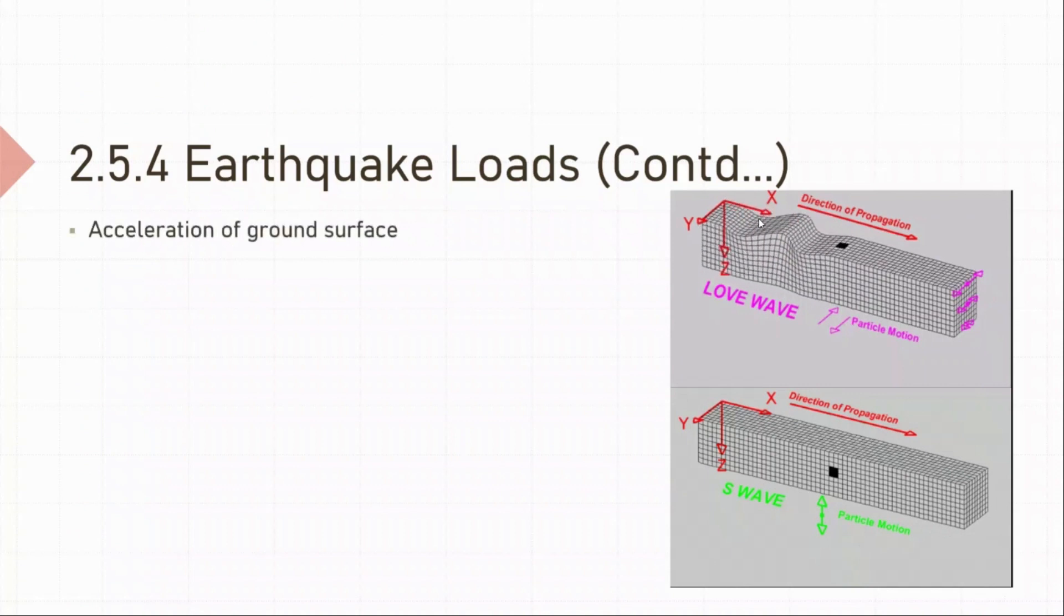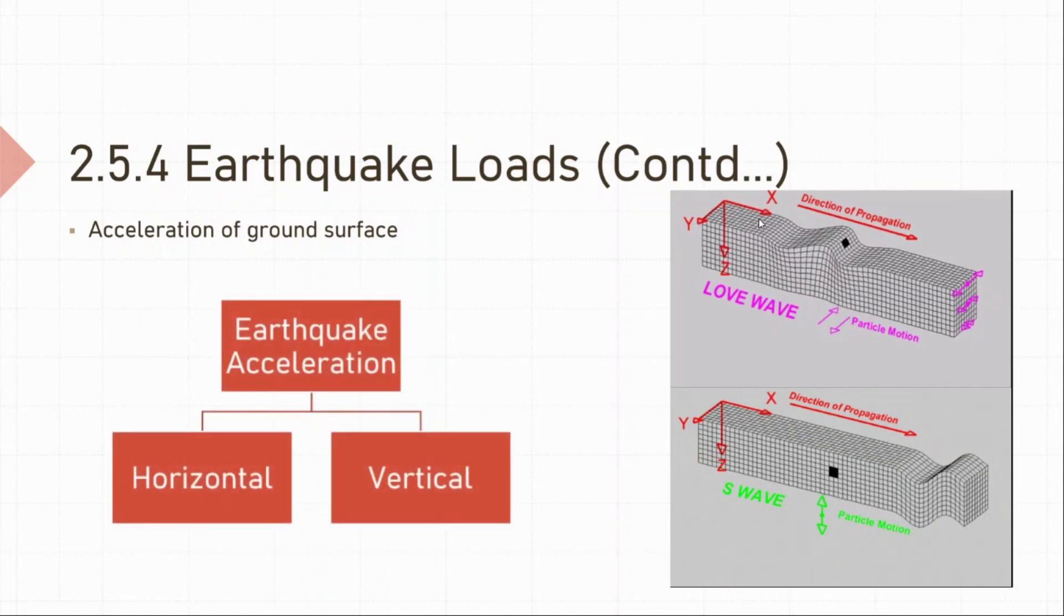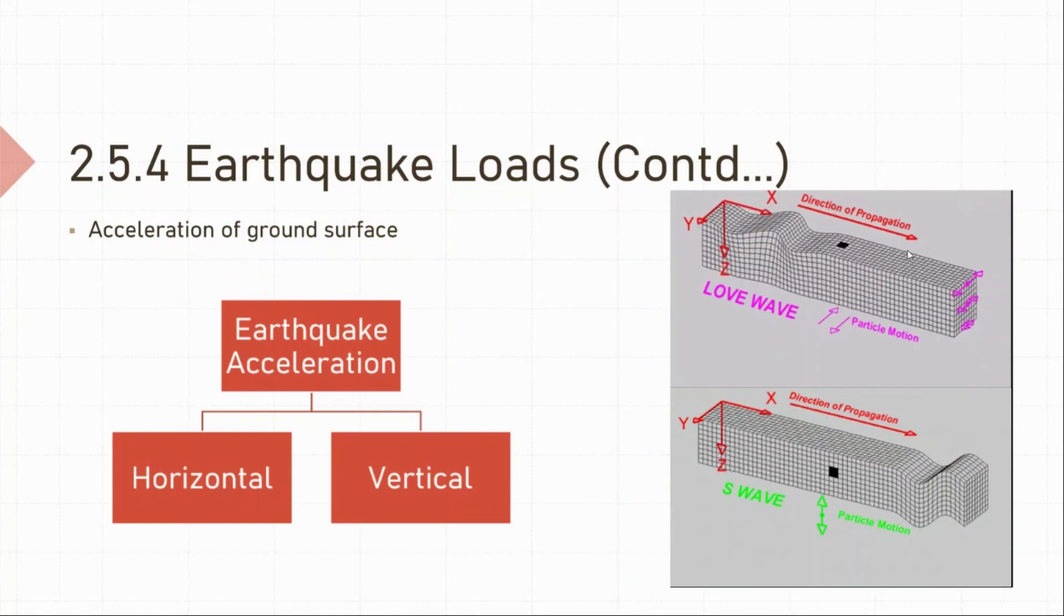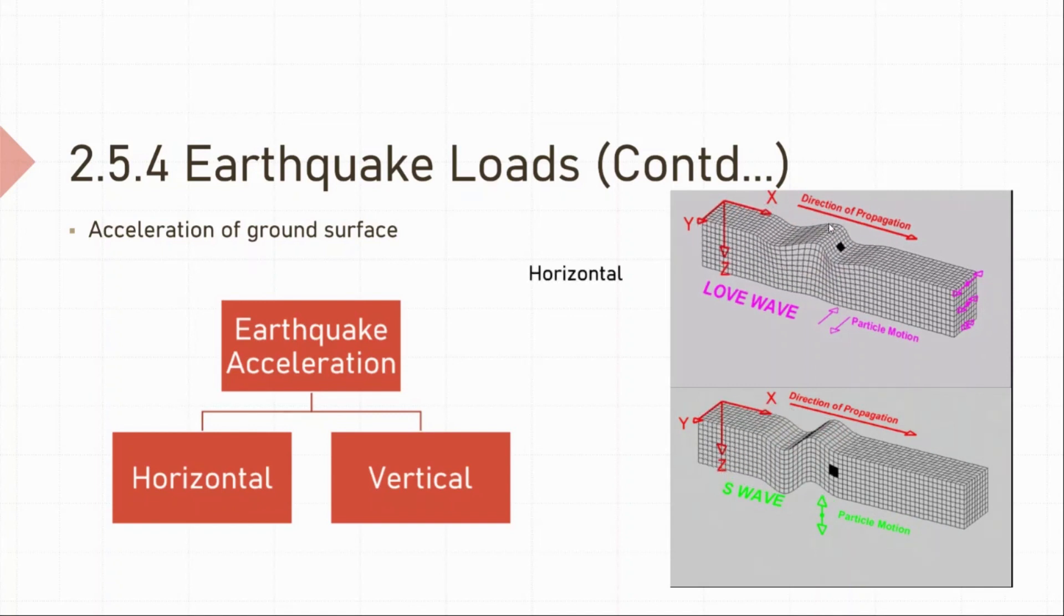As we all know, earthquake is an acceleration of the ground surface. There are mainly two types of earthquakes on the basis of the direction of motion: horizontal and vertical. Look at the small clip to your right. You can see the three axes mentioned in the clip, X, Y and Z. You can also see the direction of propagation of the wave is in the X direction. The upper right clip depicts the horizontal particle motion as the particles in the wave moves in the X, Y plane. And the bottom right clip depicts the vertical motion as the particles are moving in the Y, Z plane.